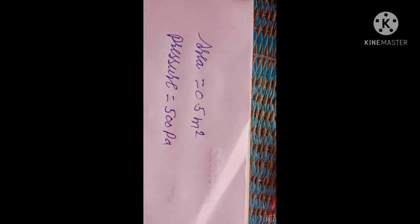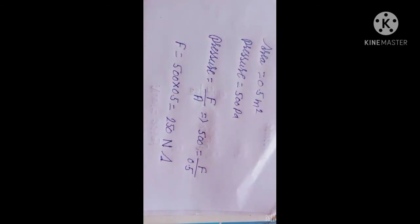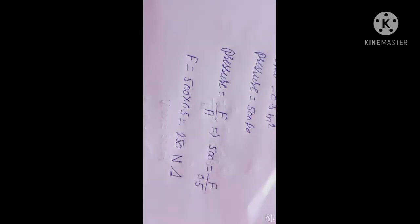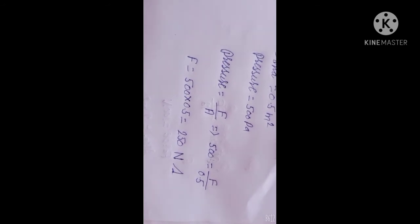We have area equal to 0.5 meter square and pressure equal to 500 Pascal. Using the formula pressure equals force divided by area, we get 500 equals force divided by 0.5. Carrying 0.5 to the other side, force equals 500 into 0.5, which equals 250 Newton.